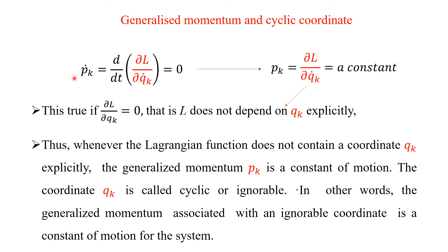We have seen that P_k-dot equals the time derivative of delta L over delta q_k-dot, which equals zero. If you integrate both sides, the left gives P_k and the right gives delta L over delta q_k-dot equal to a constant — because integrating zero gives a constant. This is true only if delta L over delta q_k equals zero, i.e. if L does not depend on q_k explicitly. So q_k is an ignorable or cyclic coordinate.